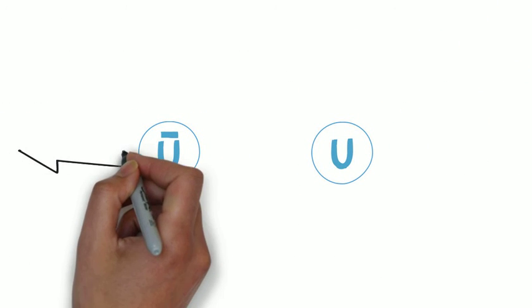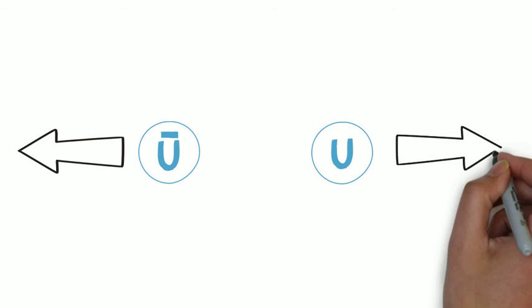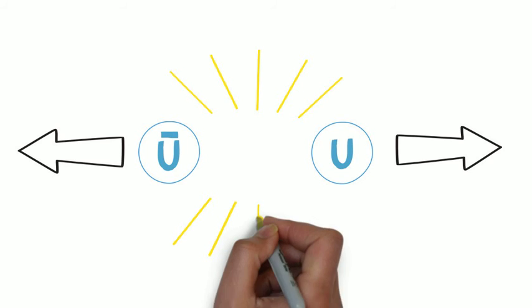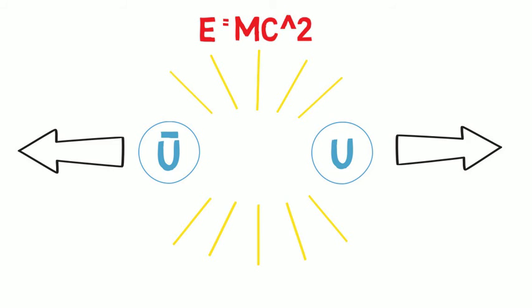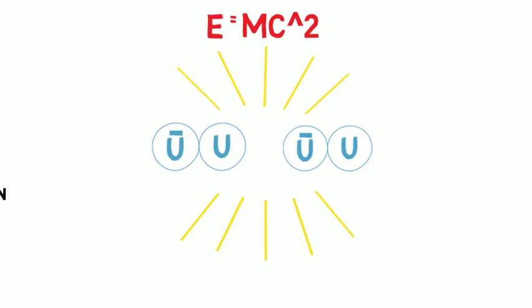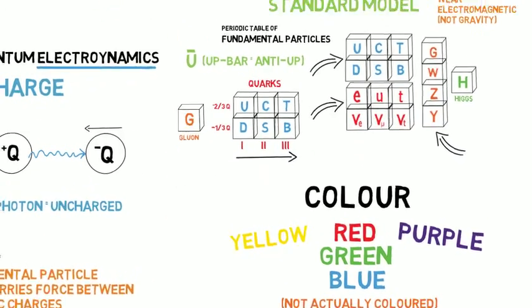So what happens if you try to pull apart two quarks? Unlike the electromagnetic force, which decreases in strength as you pull apart two charges, the strong force gets stronger the more you pull. It's much like trying to pull apart an elastic band. Remember Einstein's famous energy-mass relation? Eventually so much energy has been dedicated to pulling the quarks apart that from this energy two new quarks can be created. And so instead of snapping the first elastic band, you always end up with a second. So there's my brief introduction to colour confinement.